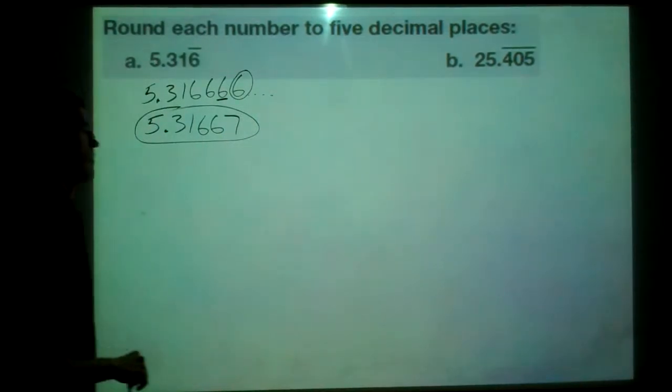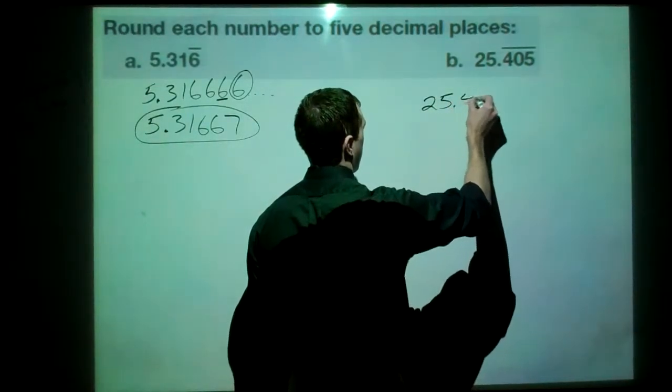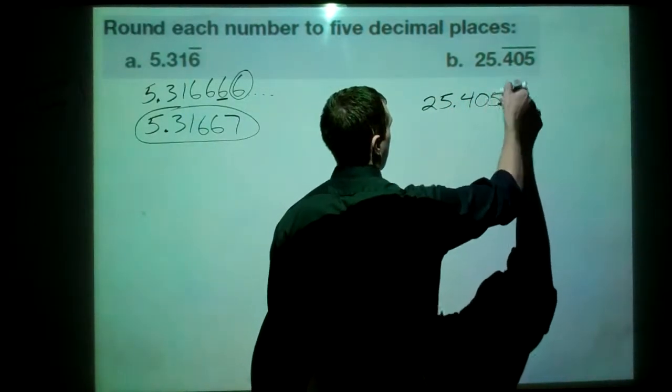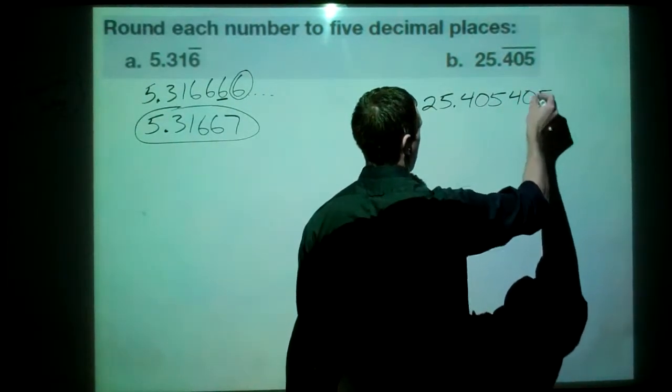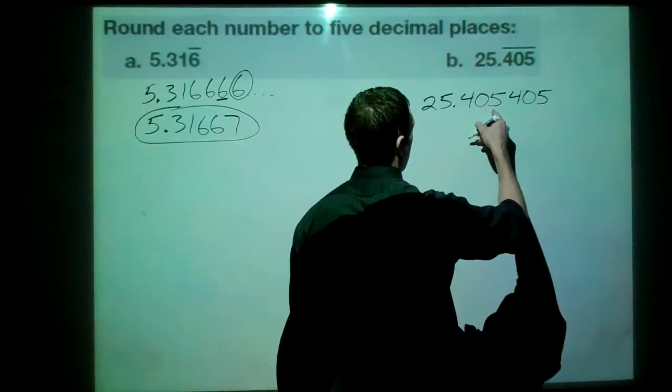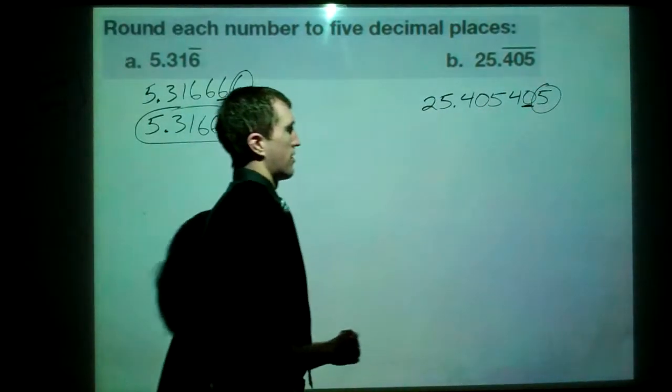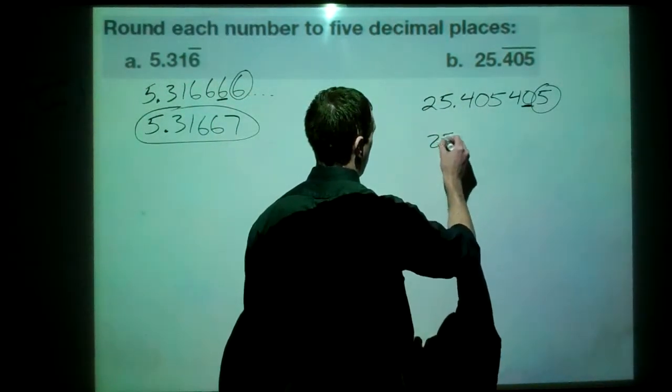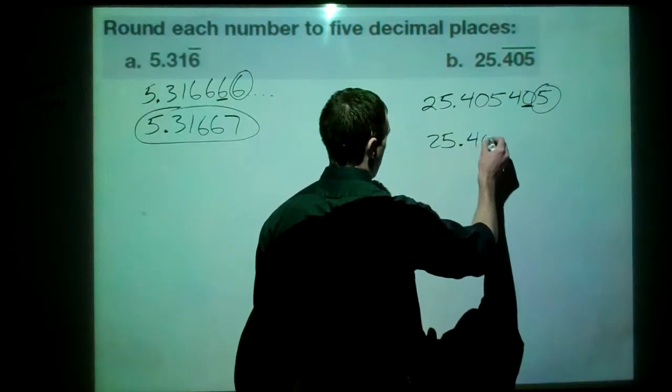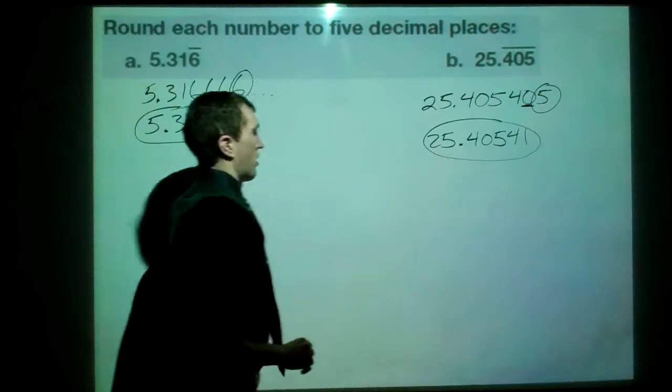Let's take a look at B. We'll write this one out to 6 decimal spots. 4, 0, 5. This whole thing is being repeated. So, we'll write it again. 4, 0, 5. So, 1, 2, 3, 4, 5, 6 spots. Look at that. That is 5 or above as well. So, 25.4054, and we're going to round it up to a 5.